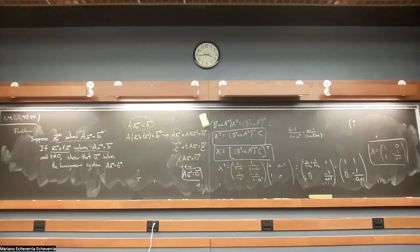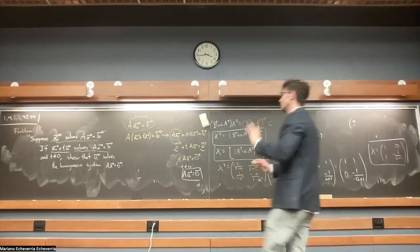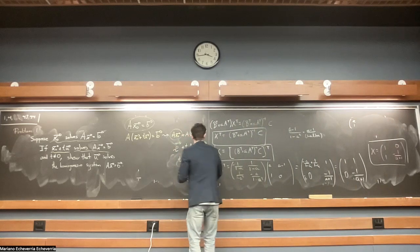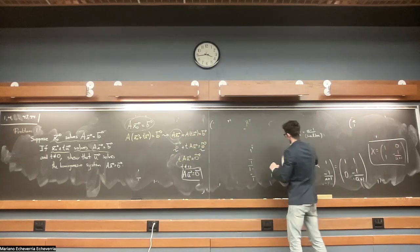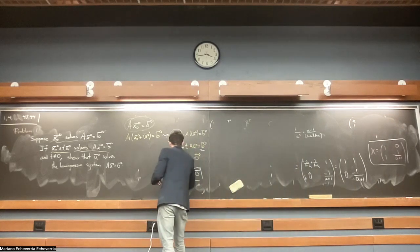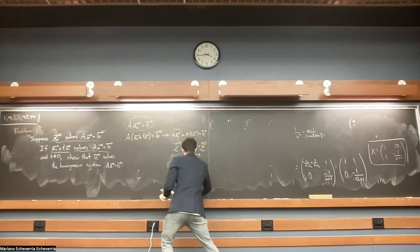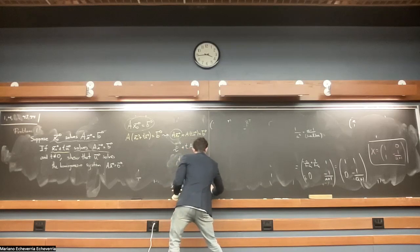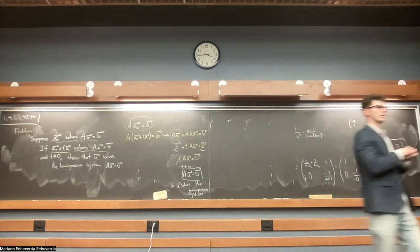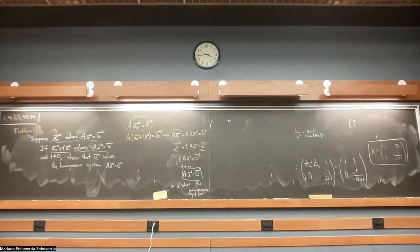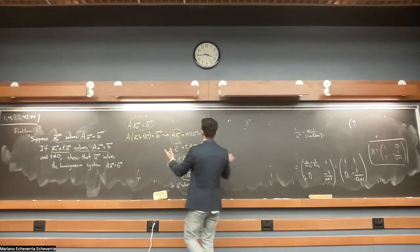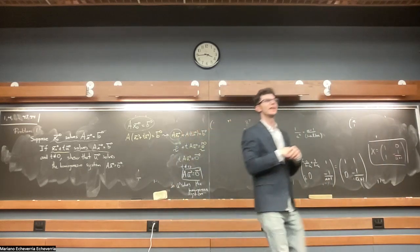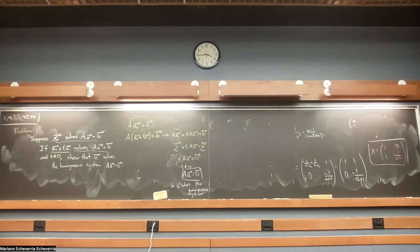So u solves the homogeneous system Ax = 0. A student asks about setting x₀ equal to x₀ + tu directly — that cannot be done because the only thing you know about these vectors is that each solves the system of equations, which always involves matrix A. You don't have an equation for them in isolation, only together with A.